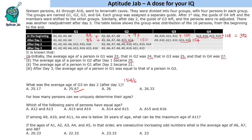After day 2, G1's average age became 21 with 7 people, giving a total of 147, and G2's total becomes 245. After day 3, the average age of G1 equals that of G2, and both groups have 8 people each. Since averages are equal and group sizes are equal, the total ages must be equal — each group gets 196, half of the 392 grand total.